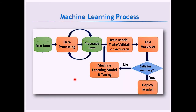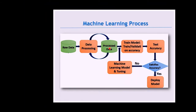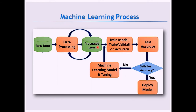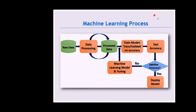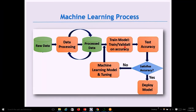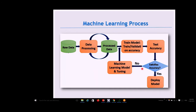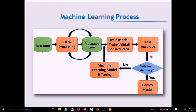The machine learning process starts with acquiring raw data, which may contain mislabeled samples or errors. The data is then processed until clean. The processed data is fed into the machine learning algorithm, and we tune the model until it achieves the highest accuracy, then deploy it. The goal is to create a model that mimics human intelligence.